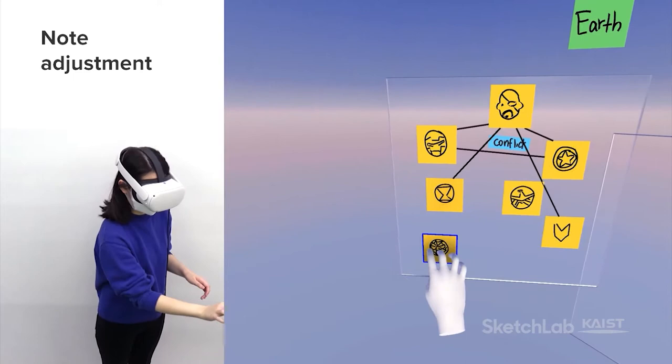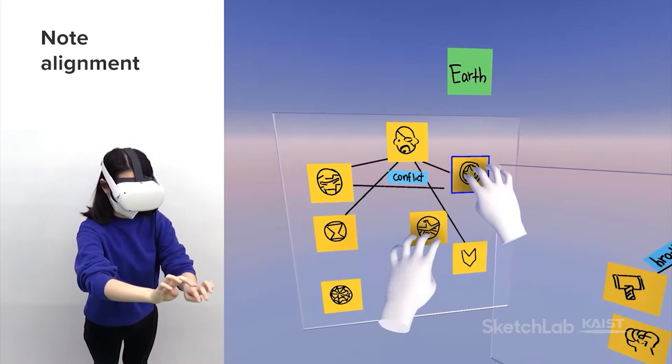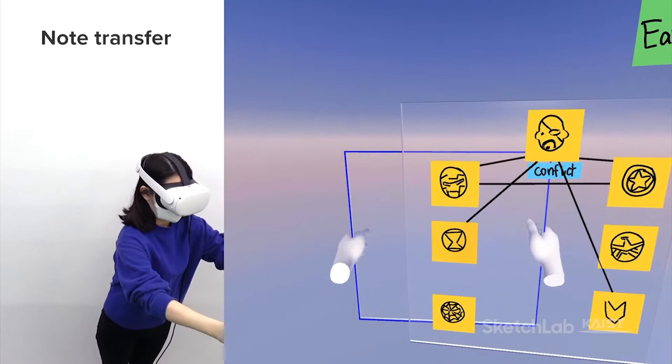You can either set Iron Man as the reference and align others to him, or set Captain America as the reference and align others to him. As the conflict intensifies, the Avengers eventually split apart.